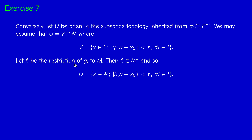When we restrict Gi to the subspace M, we get an element that is still linear and continuous, but now defined on M, so it's an element in the dual of M. And U is the corresponding set, which is by definition weakly open — it belongs to sigma(M, M*). Therefore, the two collections coincide.